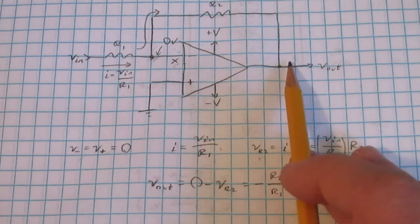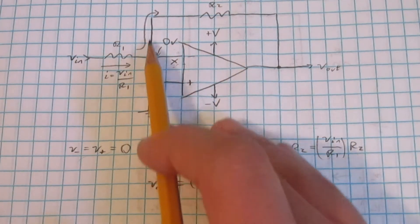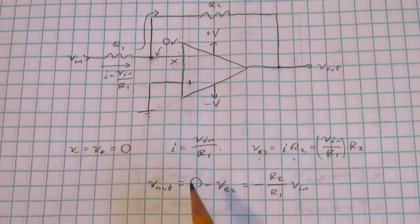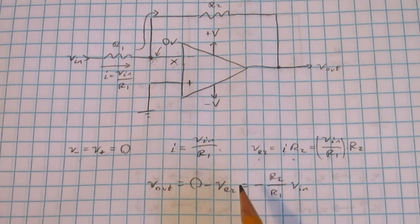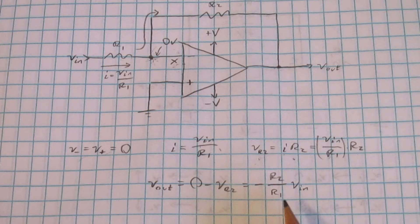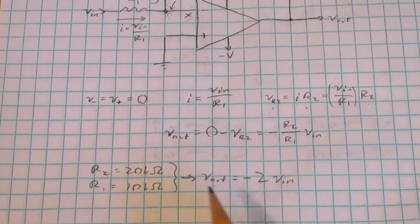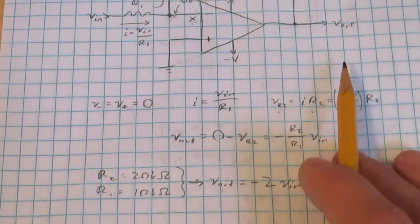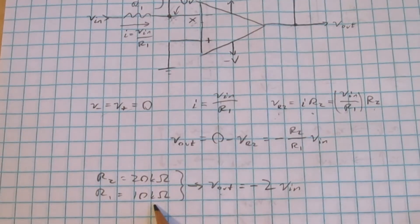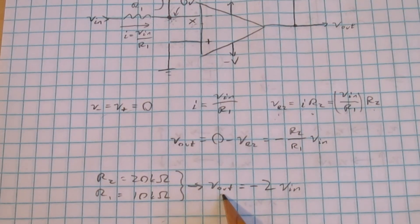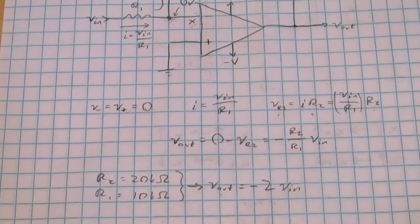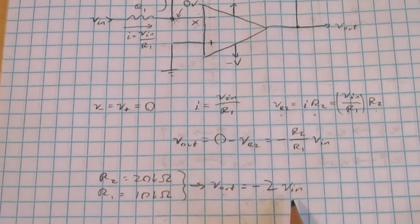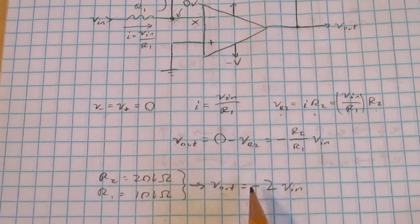The voltage at the output must be the voltage at this node minus the voltage drop over R2. We know this node is 0 volts, so V-out equals 0 minus (R2/R1) times V-in, giving us V-out = -(R2/R1) × V-in. Let's plug in some values: say R2, the feedback resistor, is 20 kilohms, and R1, the input resistor, is 10 kilohms. You get an output voltage equal to negative 2 times the input voltage. That's why it's called an inverting amplifier — the input voltage gets multiplied by a constant (the amplification), and it has a negative sign, so it gets inverted.